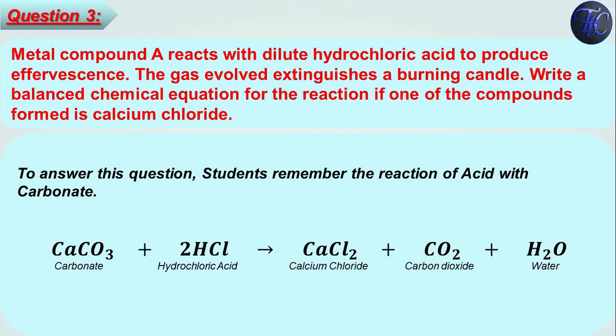Now let's see the third question. Metal compound A reacts with dilute hydrochloric acid to produce effervescence. The gas evolved extinguishes a burning candle. Write a balanced chemical equation for the reaction if one of the compounds formed is calcium chloride. The hint is that the gas evolved extinguishes a burning candle. Which gas is it? Carbon dioxide.